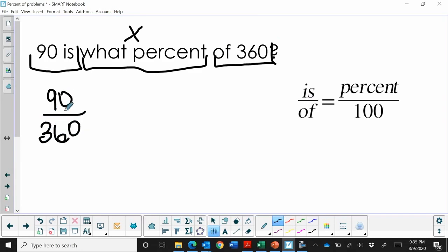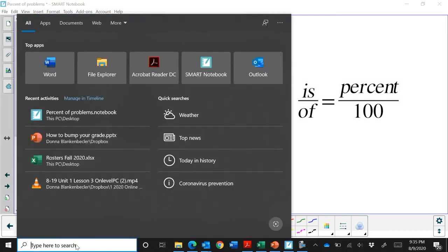So 90 out of 360 is equal to some percentage which we don't know. So that becomes our variable or our unknown x all over 100. So what we've done here is we've set up a proportion.